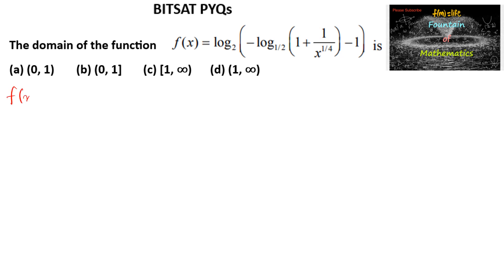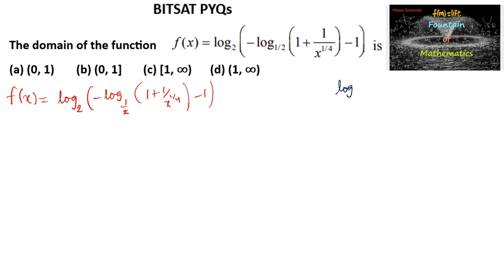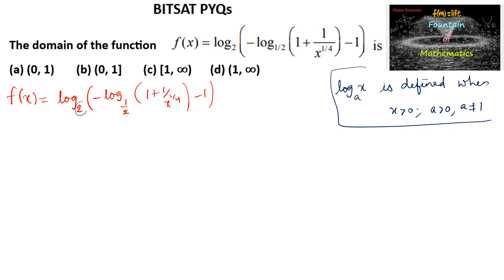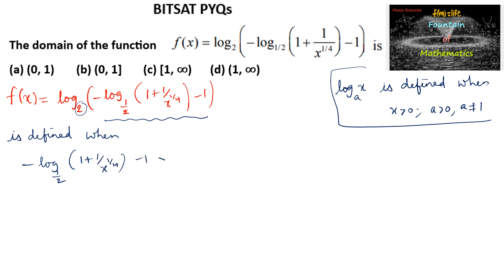We need to find the domain of f(x) = log_2(−log_(1/2)(1 + x^(1/4))). Since log_b(a) is defined when a > 0, b > 0, b ≠ 1, and since base 2 > 0, the inner argument −log_(1/2)(1 + x^(1/4)) must be positive.